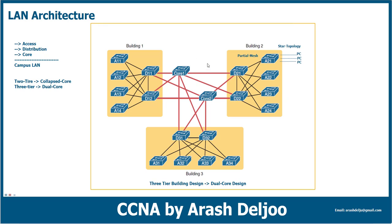In the core layer, in some cases we use partial mesh and in other cases we use full mesh. This depends on cost and requirements. Between the access and distribution layers, using a full mesh is not suitable — it costs more money and we don't want traffic going from PC to access switch A21 then to A22. Partial mesh is recommended here. Always the full mesh is not better than partial mesh — as a designer you must select which is better for your network.